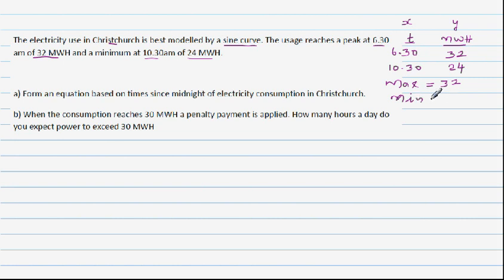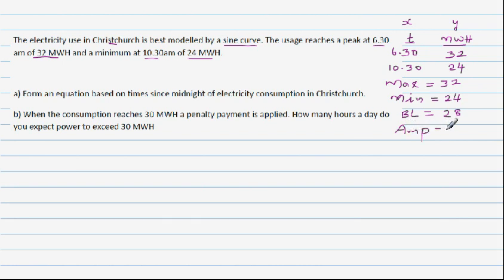From the maximum and minimum we can find the baseline, which is the average of the two: 32 plus 24 equals 56, so half of that is 28. The amplitude is the distance between the baseline and the maximum or minimum, so going from 28 to 32 gives an amplitude of 4.